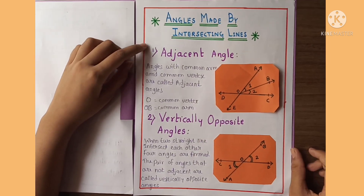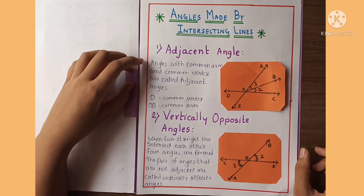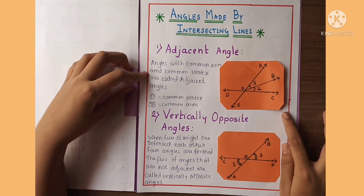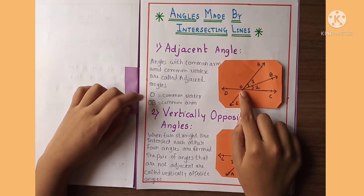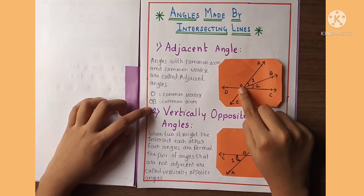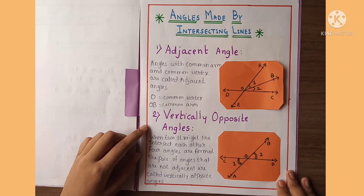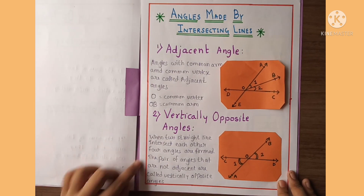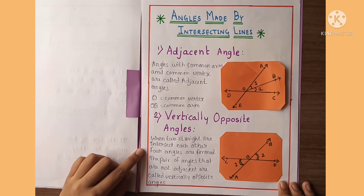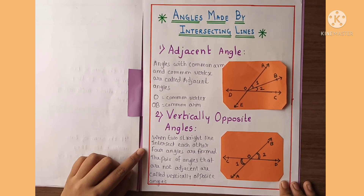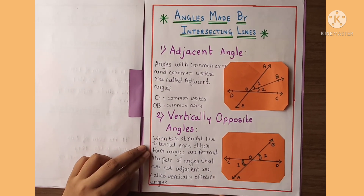Angles made by intersecting lines. First, adjacent angles — angles with a common arm and common vertex are called adjacent angles. Here, O is the common vertex and OB is the common arm. Second, vertically opposite angles — when two straight lines intersect each other, four angles are formed. The pairs of angles that are not adjacent are called vertically opposite angles.